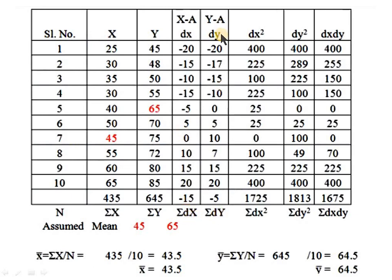Next we calculate dy by subtracting the assumed mean of 65 from each y value: 45−65=−20, 48−65=−17, 50−65=−15, 55−65=−10, 65−65=0, 70−65=5, 75−65=10, 72−65=7, 80−65=15, 85−65=20. Adding the negative and positive values, Σdy equals −5.